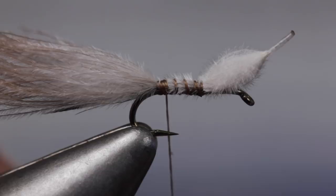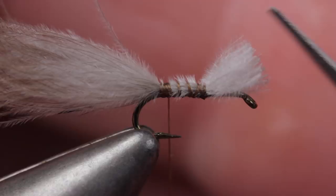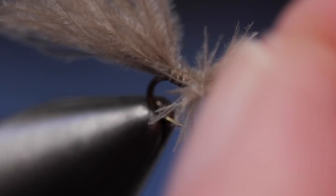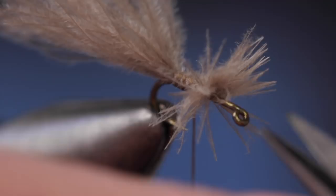Now for the really clever part. Snip the butt end of the puff off to free the lower ends of the CDC fibers. Divide the fibers into roughly equal amounts on either side of the hook to represent emerging wings. Then, reach in with the tips of your tying scissors and snip away just the stem.